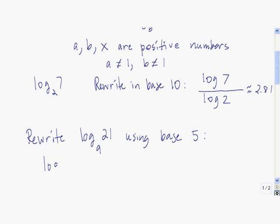We have log base 9 of 21 is equal to... We're using base 5, so we're going to have log base 5 in the numerator and log base 5 in the denominator. The 21 is what we take the log base 5 of in the numerator, and the 9, the old base, is what we take the log base 5 of in the denominator. So log base 9 of 21 is equal to the log base 5 of 21 divided by the log base 5 of 9.